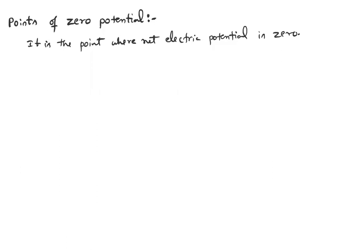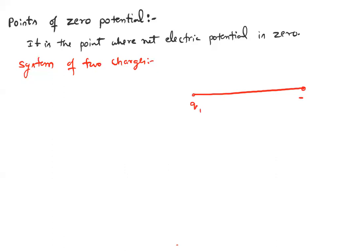Now we'll discuss electric potential for a system of two charges. Let's assume two charges q1 and minus q2. For electric potential to be zero, at least one charge must be negative — potential due to positive charges is positive and potential due to negative charges is negative, so their summation can be zero only if one provides a negative potential. These two charges are separated by a distance r.